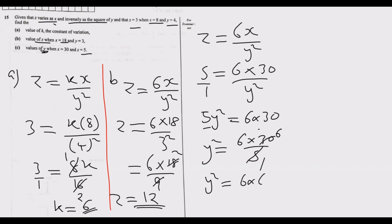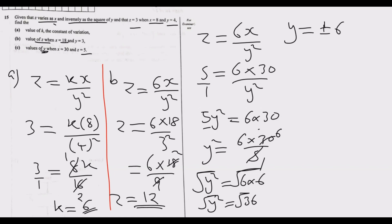Since 5 into 30 is 6, we get y² = 6 × 6 = 36. Taking the square root of both sides: y = ±√36. The square root of 36 is 6, so y equals positive 6 or negative 6. These are the two values of y. That's how you solve Question 15.